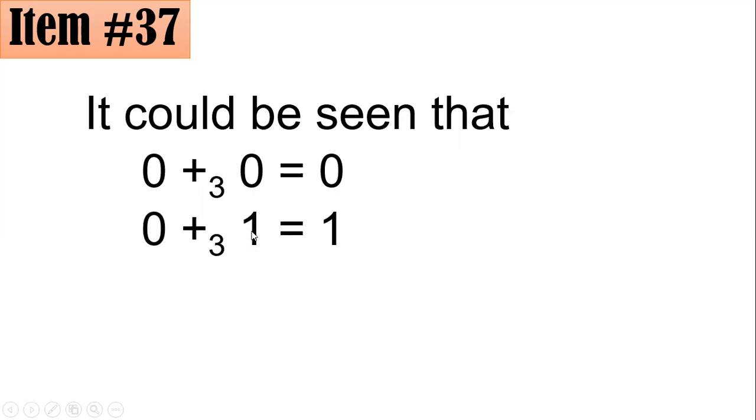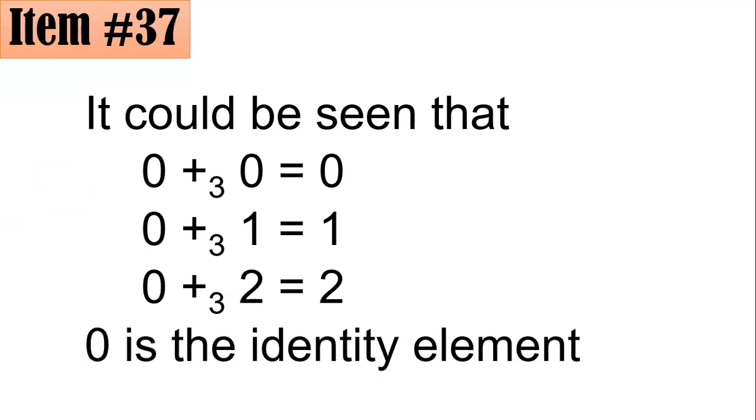So when we speak about identity element, whatever element operated to it will still be the element itself. So if you could see, if you add 0 with 0 under modulo 3, you have 0. If you add 0 plus 1, that's 1. If you add 0 with 2, that's 2. You see, if any element operated with 0, it's still itself. This means to say that 0 is the identity element, letter A.